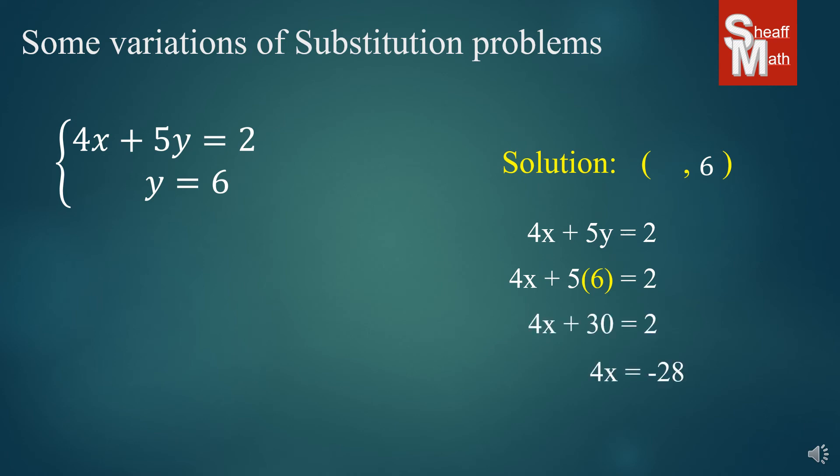All we have to do is take this equation, 4x plus 5y equals 2. Substitute the 6 in for the y this time, because the 6 is y. Simplify. I'm just guessing that you know how to do this, so I'm just kind of speeding up here. Divide by 4, and x equals negative 7. This is the point where these two lines intersect. Y equals 6 is definitely an equation. It's in slope-intercept form. It just has zero x's, meaning it's a horizontal line. It goes across the graph at the 6 on the y.